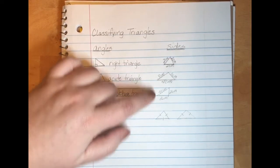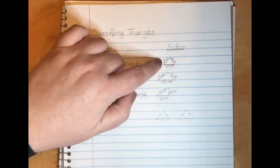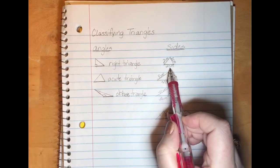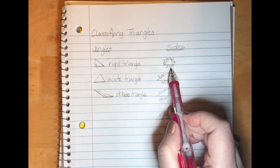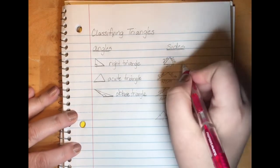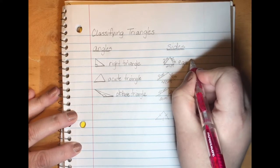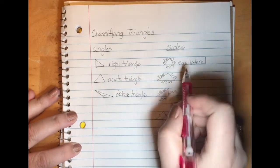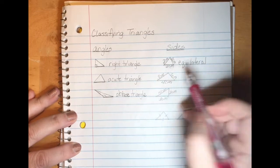Please note that the measurements here are just for display purposes — these are not the actual measurements of the pictures. The first triangle shows all three sides are two centimeters. So when we have a triangle with three equal sides, it's going to have a familiar name: we call it an equilateral triangle because all of the sides are equal.